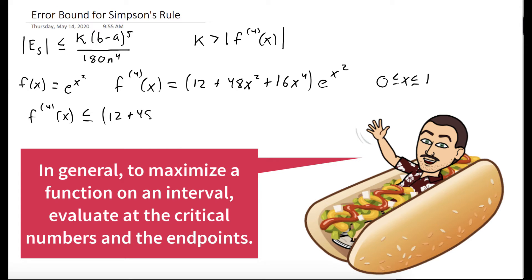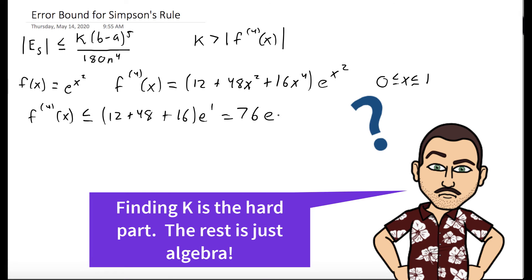In general, what you would need to do is take the derivative of the fourth derivative and set it equal to zero, find the critical numbers and also test the endpoints. But here we have a nice increasing function, so we know it's going to happen when x equals 1. So we'll take k to be 76e.